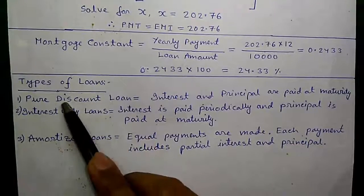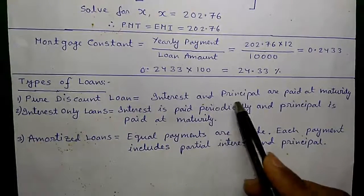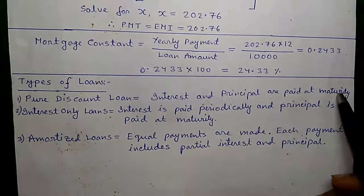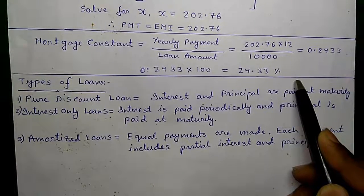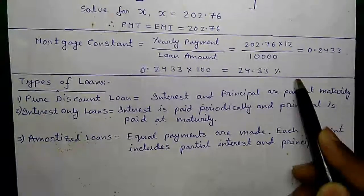Types of loans: Pure discount loan where interest and principal are paid at maturity. Example: you are borrowing some money from your friend, telling that you will return the money along with interest after 5 years.